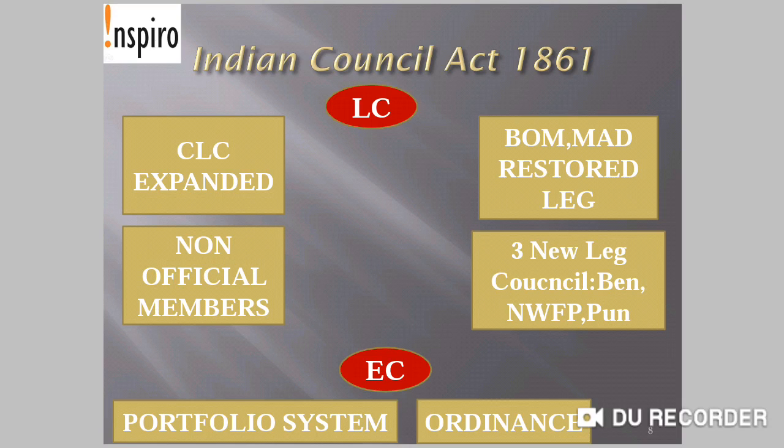So Indians could now be associated with the legislative process in the Central Legislative Council. Bombay and Madras also restored their legislative powers, which had been taken away under the Chartered Act of 1833 and submitted to the Governor General of India. The decentralization process in Indian constitutional setup had thus begun with the Indian Council Act 1861.